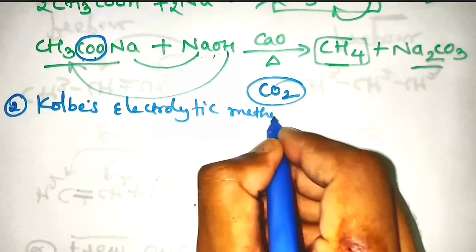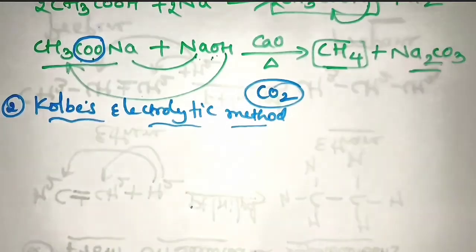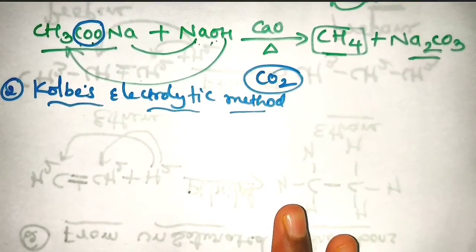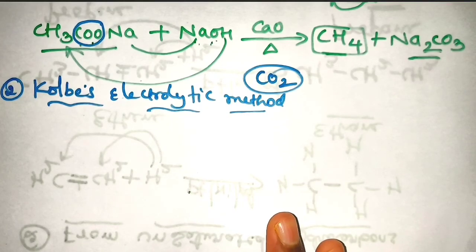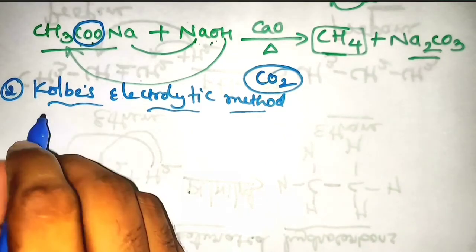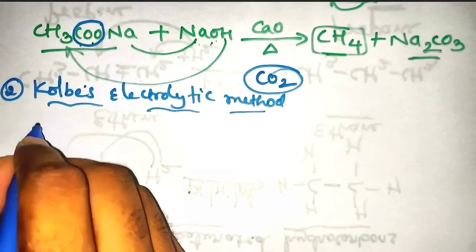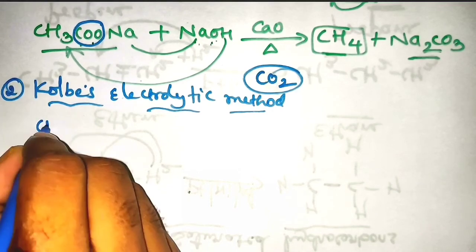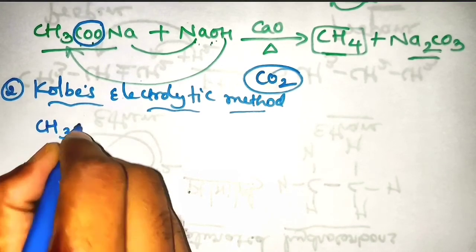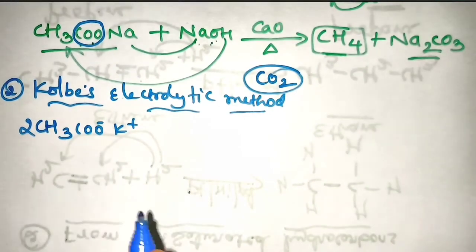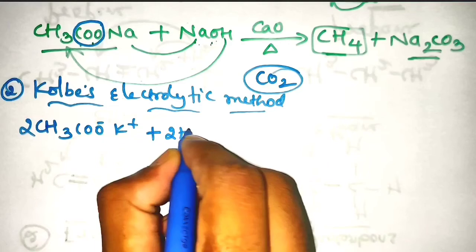In electrolysis, we take an aqueous solution of electrolyte with an anode and a cathode. In this Kolbe's electrolytic method, an aqueous solution of sodium salt or potassium salt of carboxylic acid is taken. I will take the potassium salt of carboxylic acid: CH3COO⁻K⁺ — that is potassium salt of carboxylic acid in aqueous solution.